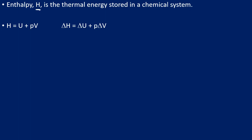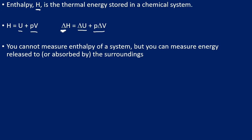Enthalpy is equal to U, which is the internal energy, plus pressure multiplied by volume. You likely won't be asked to carry out calculations with this, but you do need to be aware of the equation. The delta symbol means 'change in,' so the change in enthalpy equals the change in internal energy plus pressure multiplied by the change in volume. It's worth noting that we can't directly measure the enthalpy of a system, but we can measure the energy released or absorbed — so we can measure enthalpy changes.